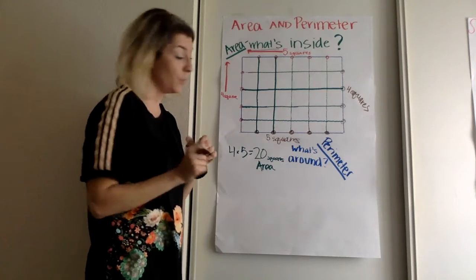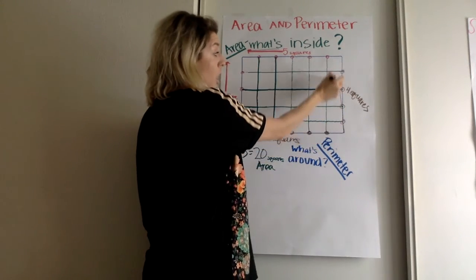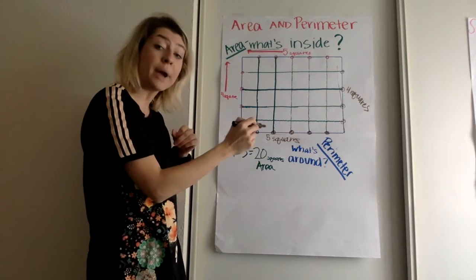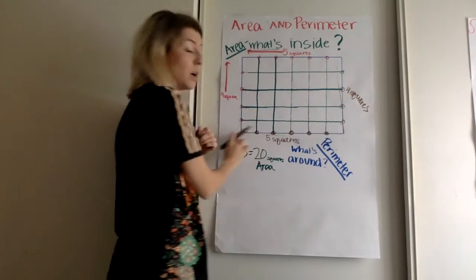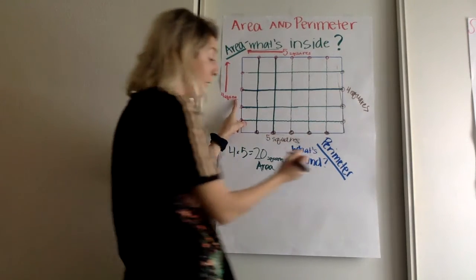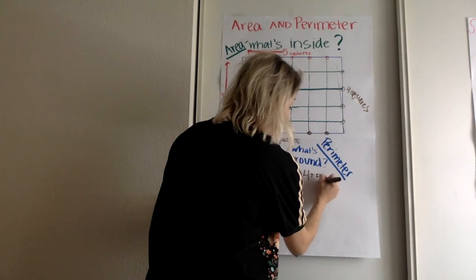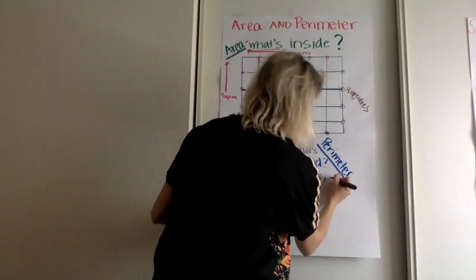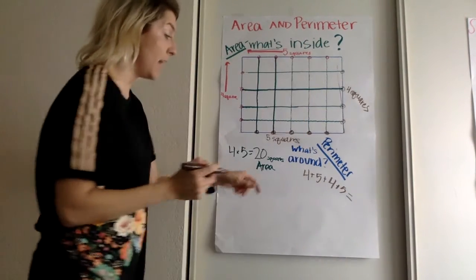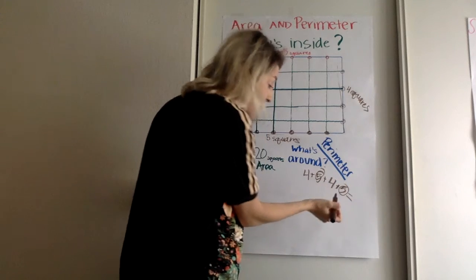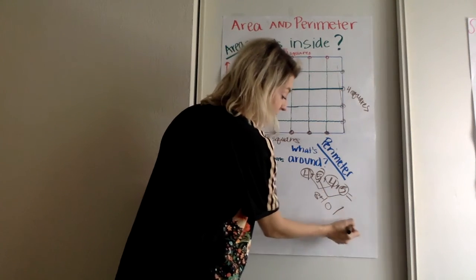Now, to find perimeter, we are going to add all the squares along the edges. So you're going around, not inside. You're finding out how long it is across all together. So you're going to take this side is four, plus this side is five, plus this side is four, plus the bottom side is five. So let's add. I know that five plus five is ten. Four plus four is eight. Ten plus eight is eighteen.